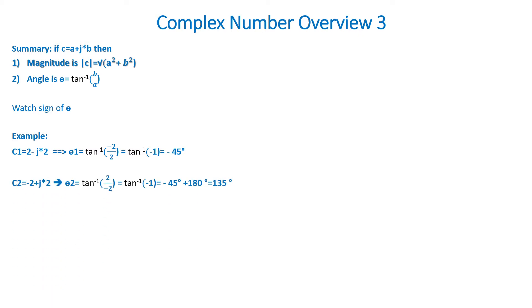Now, c2 is equal to negative 2 plus j2. Then theta 2 is equal to the inverse tan of 2 divided by minus 2, which reduces to the inverse tan of negative 1, which is minus 45 degrees plus 180 degrees, giving 135 degrees.